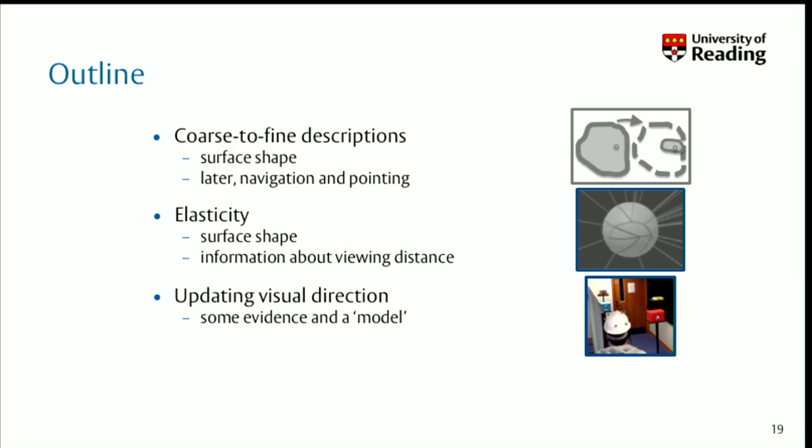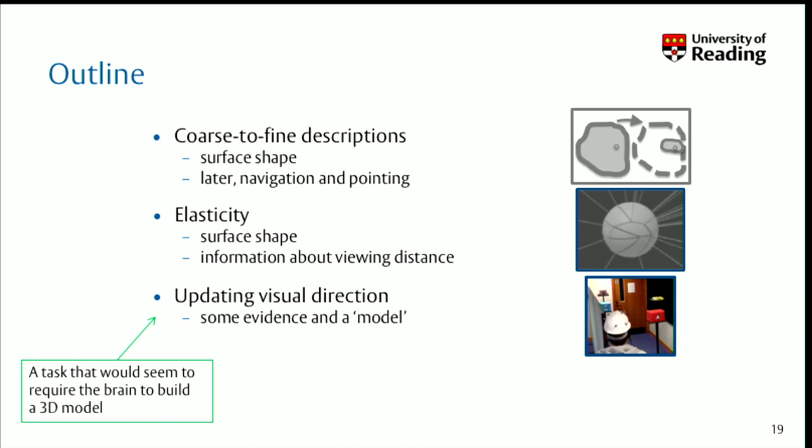I want to finish with two experiments. One is about updating visual direction. The reason to do that is that it's a task that would seem to require a 3D model. People have said: how could you possibly look at a scene from here, then not see the scene again, and then point to something? Surely you need a 3D model to do that. That's why we did the experiment.